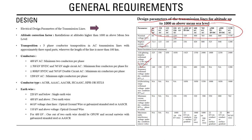Design parameters include lightning impulse withstand voltage, power frequency withstand voltage under dry conditions, switching withstand voltage, minimum current extinction voltage, and maximum radio interference voltage — all defined for different voltage levels. The standard also includes an altitude correction factor for installations above 1000 meters above sea level.